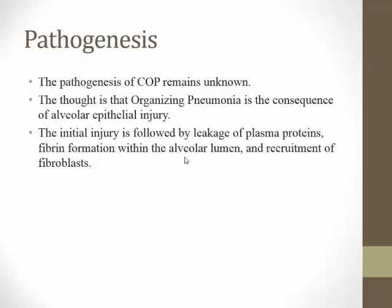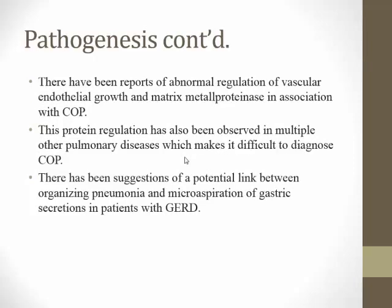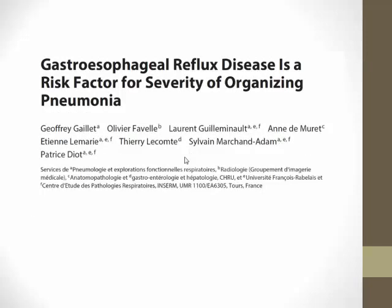The pathogenesis of COP is unknown. One theory involves leakage of plasma proteins into the alveolar lumen, resulting in recruitment of fibroblasts. There have been reports of abnormal regulation of vascular endothelial growth and matrix proteins in association with COP, but this is also described in other lung diseases such as UIP, making it non-specific. Another suggestion is that micro-aspiration of gastric secretions in patients with GERD could result in cryptogenic organizing pneumonia, and one article was found supporting this theory.